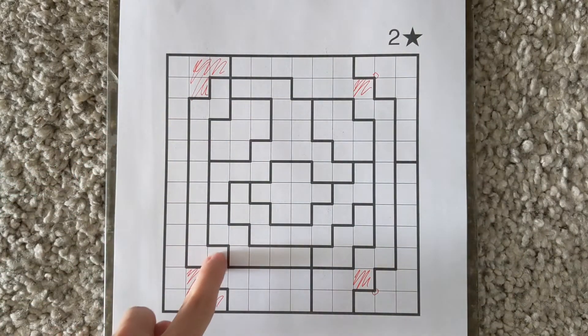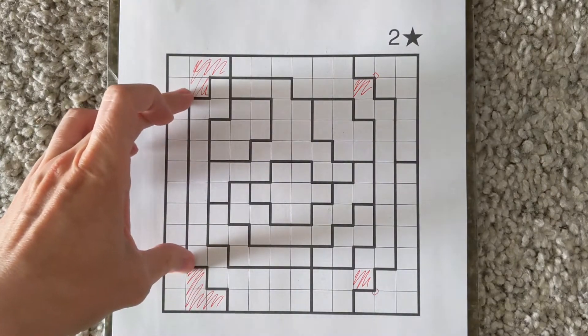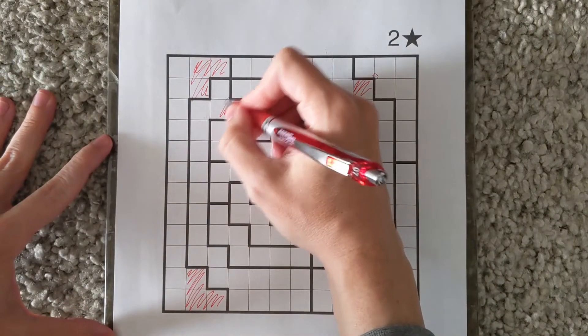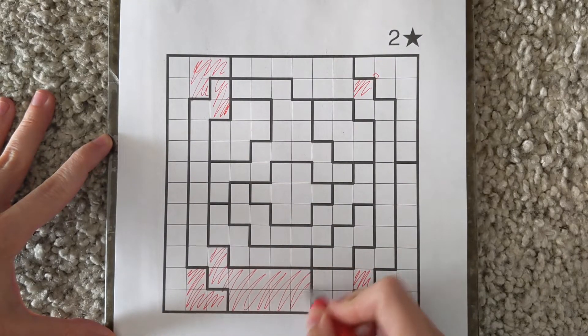And then the next thing to notice quickly is that this next region now also has the only cells remaining in column two. And so all cells that aren't in column two for that region are not usable.